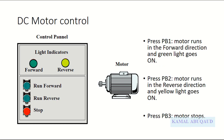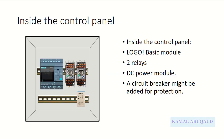The process is as follows: if push button number one is pressed, the motor runs in the forward direction and the green light goes on to indicate the motor is running forward. When push button two is pressed, the motor runs in the reverse direction and the yellow light goes on. At any time button number three is pressed, the motor stops. Inside the control panel there will be a LOGO controller, two relays, a DC power module, and a circuit breaker may be added for protection.